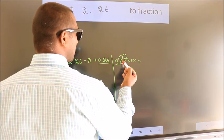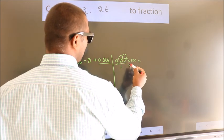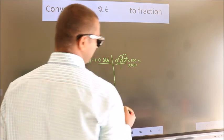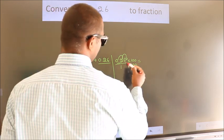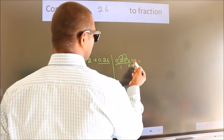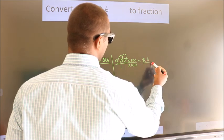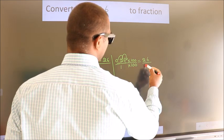Whatever we are multiplying in the numerator, in the denominator also do the same. So 0.26 into 100 is 26, and 1 into 100 is 100.